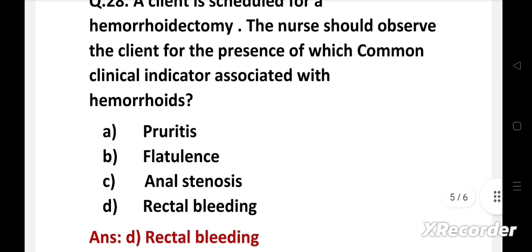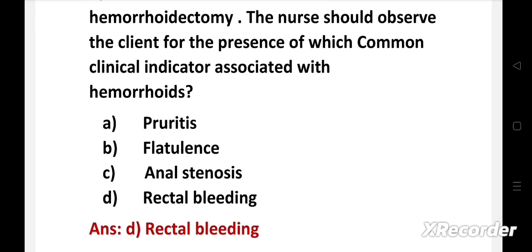Right answer is option D, rectal bleeding. The nurse should observe for rectal bleeding in case of hemorrhoids. Hemorrhoids are perianal varicose veins which are characterized by bleeding and prolapse of the anal veins. These veins may rupture and produce bright red blood. So it is important to observe for rectal bleeding in a client posted for hemorrhoidectomy.